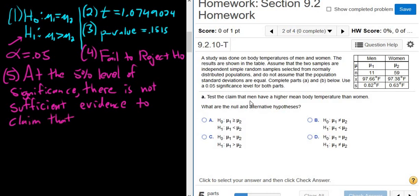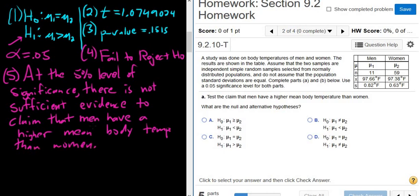So there is not sufficient evidence to support H1. So I'll just say to claim that. And then you can just go to your question. So that men have a higher mean body temperature than women. So that men have a higher mean body temp than women. I'm pretty sure this problem is going to want a confidence interval. So let's go ahead and find that also. Then we'll go through the whole question.